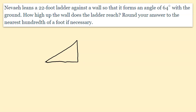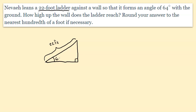The wall and the ground create a 90-degree angle, so we put a square there indicating the right angle. We know it's a 22-foot ladder, so we mark the length as 22 feet. It forms a 64-degree angle with the ground, so the angle between the ladder and the ground is 64 degrees. The angle between the ladder and the wall would be up here, which is not the one we're talking about.